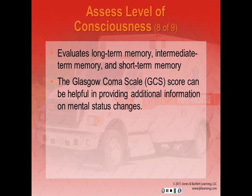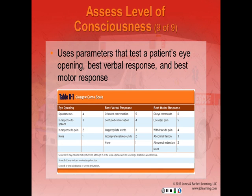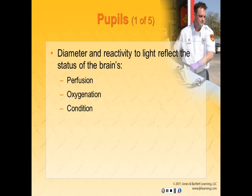The Glasgow Coma Scale score can provide additional information on patients who have mental status changes. The GCS utilizes parameters that test eye-opening, best verbal response, and best motor response, providing a numeric score that defines the severity of a patient's brain dysfunction. The eye-opening side of the scale correlates nicely to AVPU: eyes open spontaneously correlates to alert, open in response to speech correlates to verbal, open in response to pain, or no eye opening. Verbal and motor responses are also described in table 8.1.